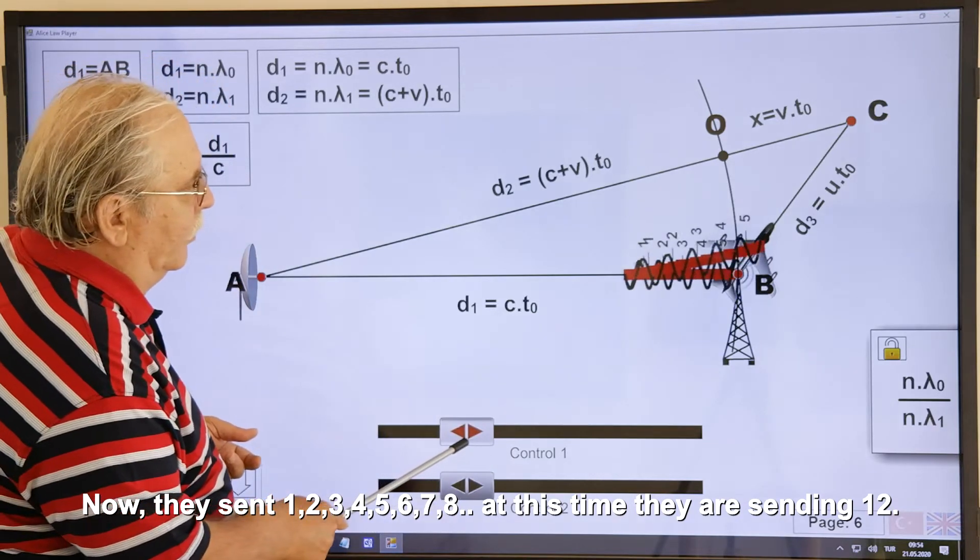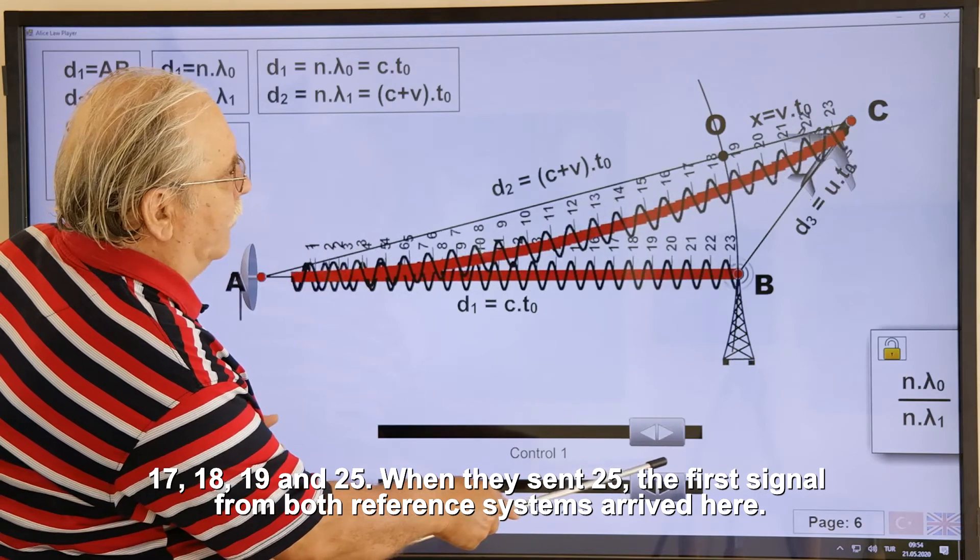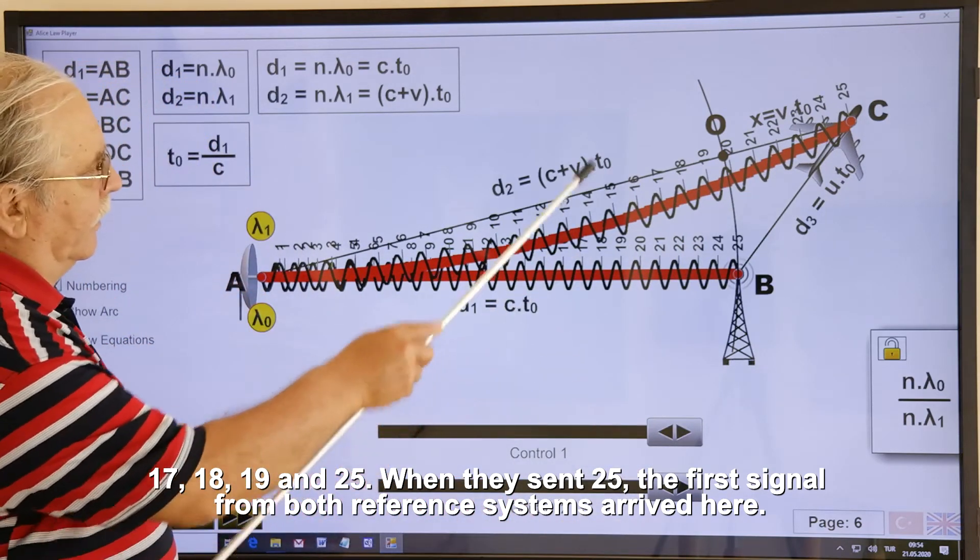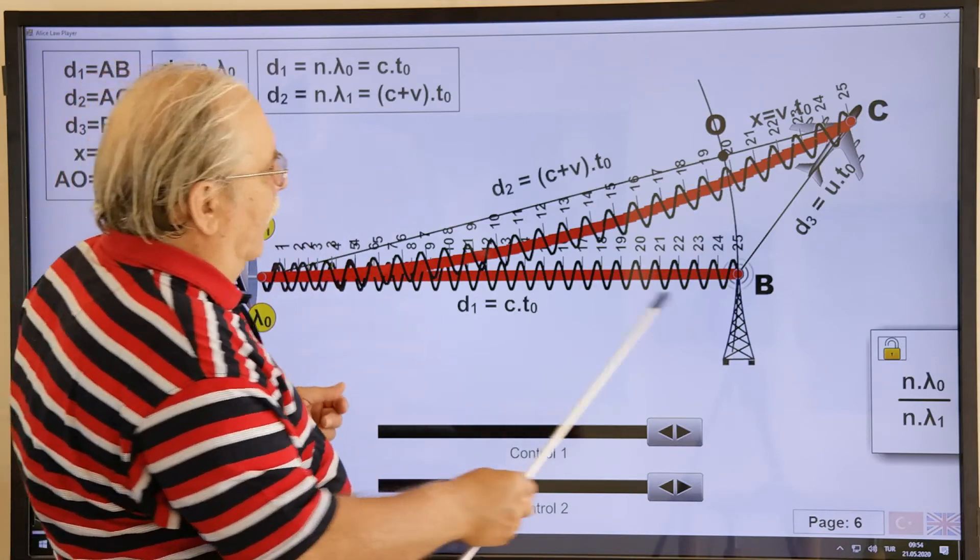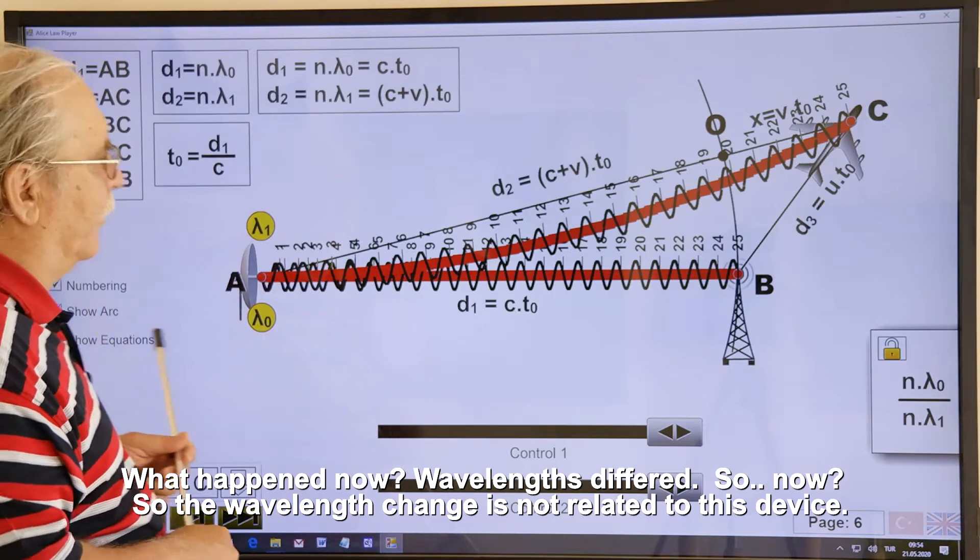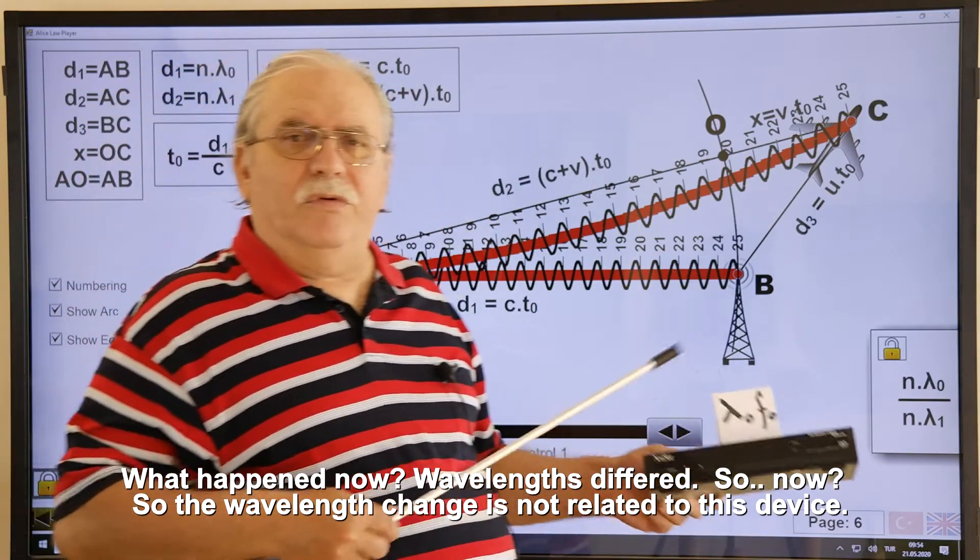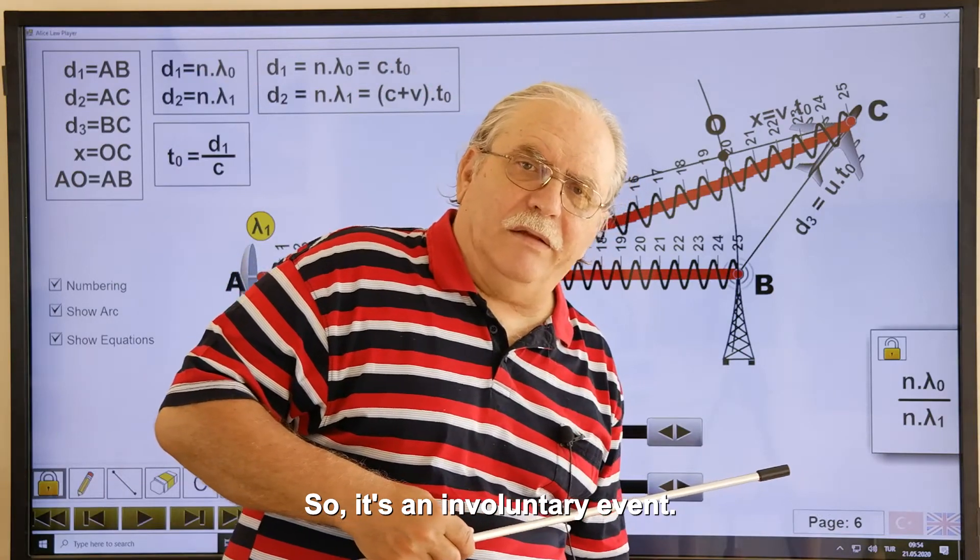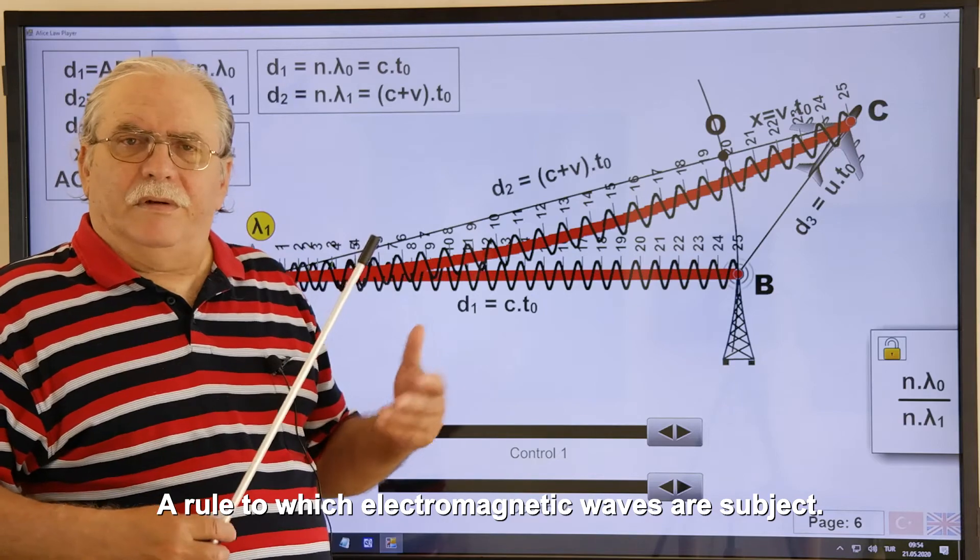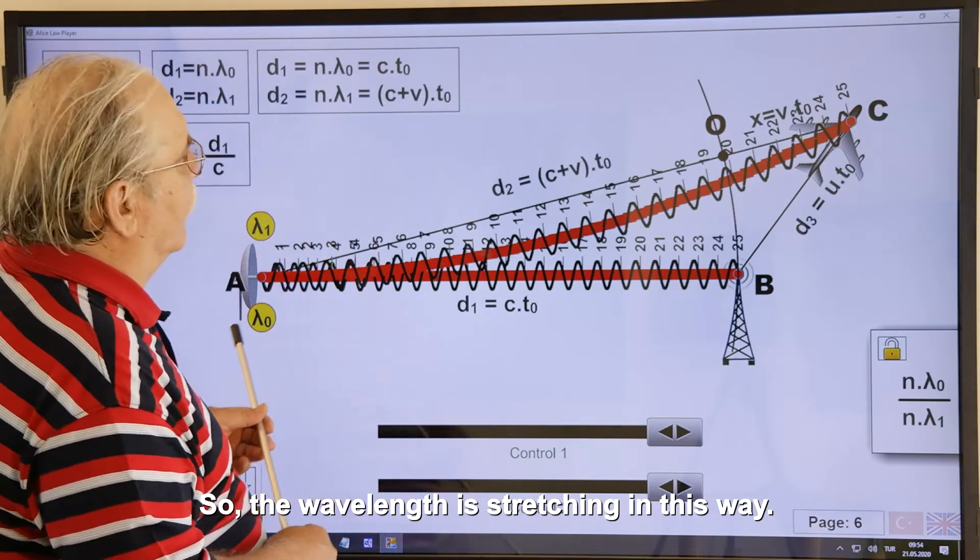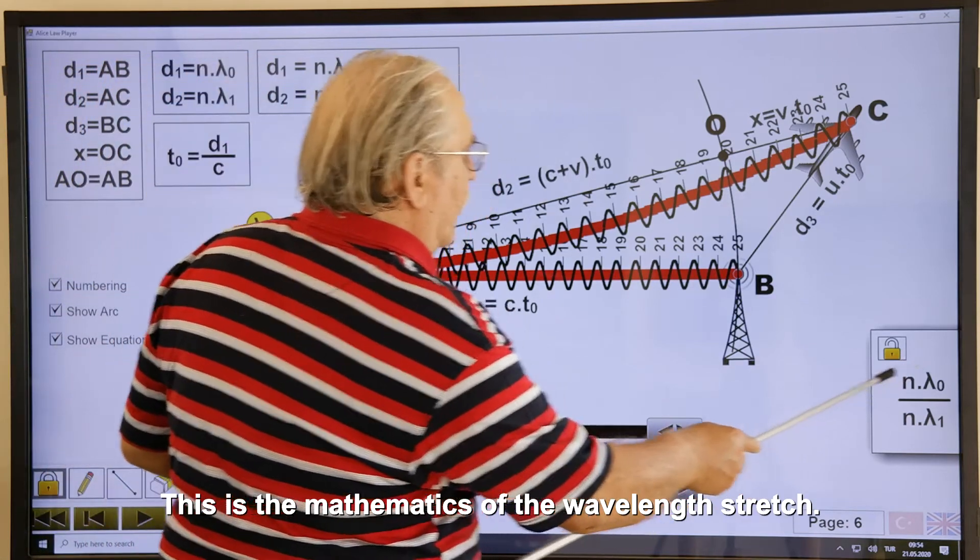Now, they sent 1, 2, 3, 4, 5, 6, 7, 8. At this time they are sending 12. 17, 18, 19, and 25. When they sent 25, the first signal from both reference systems arrived here. What happened now? Wavelengths differed. So, now, so the wavelength change is not related to this device. So, it's an involuntary event. A rule to which electromagnetic waves are subject. So, the wavelength is stretching in this way. This is the mathematics of the wavelength stretch.